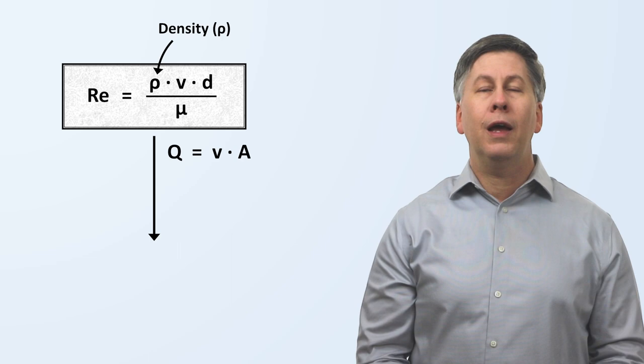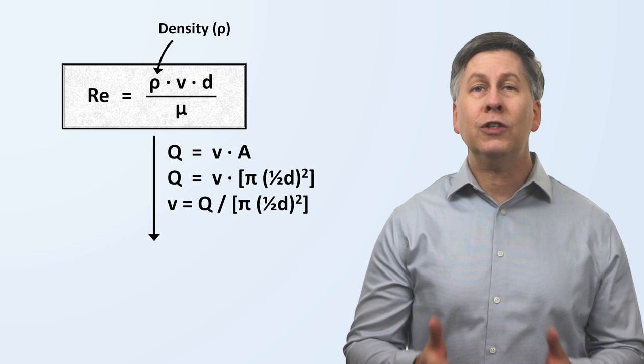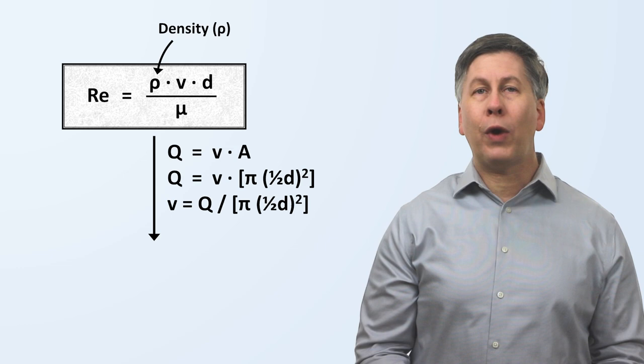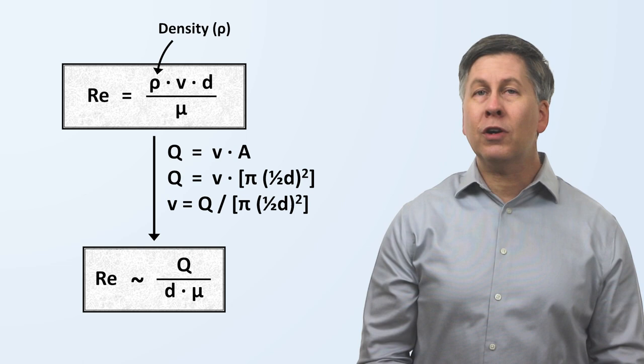And using the simplifying assumption that the cross-sectional area is a circle, and using the fact that the density of blood is more or less constant, we can rewrite this equation as the Reynolds number being proportional to the flow divided by the diameter of the blood vessel and the viscosity of blood.